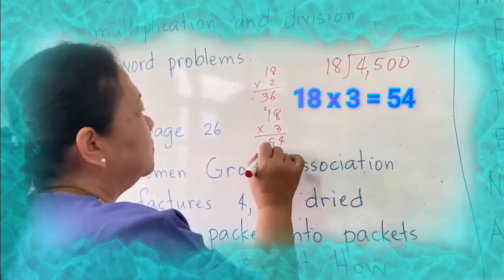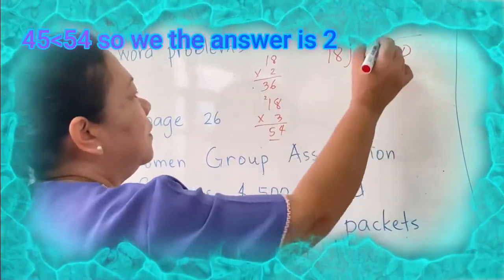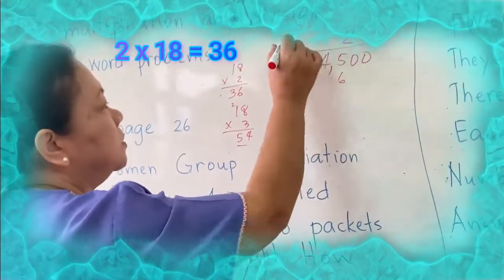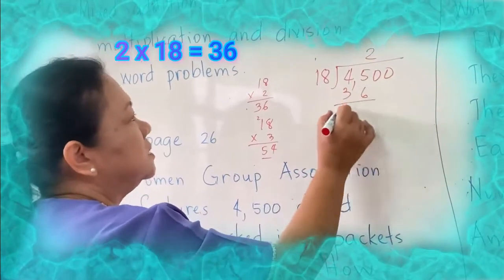More than 45 already. So we use 2. 2 times 8 is 16, carry 1. 2 times 1 is 2, plus 1 is 3, 36. Then subtract.